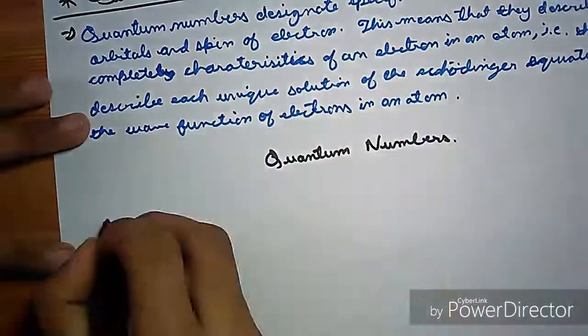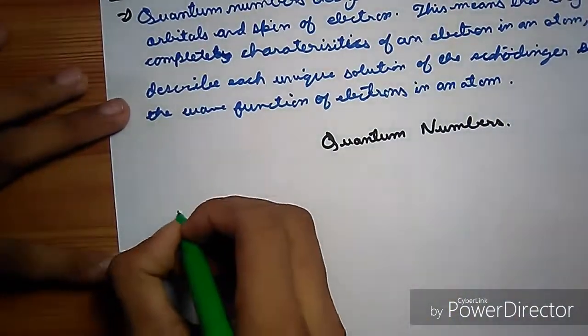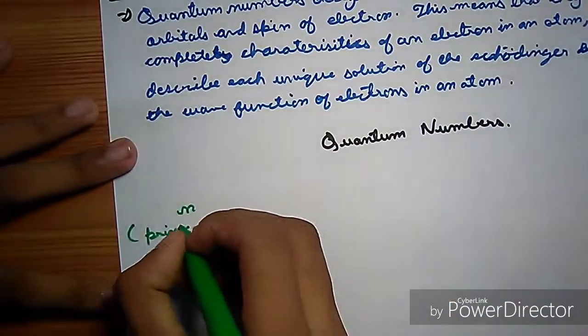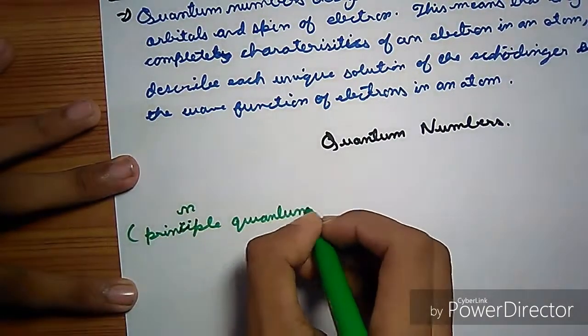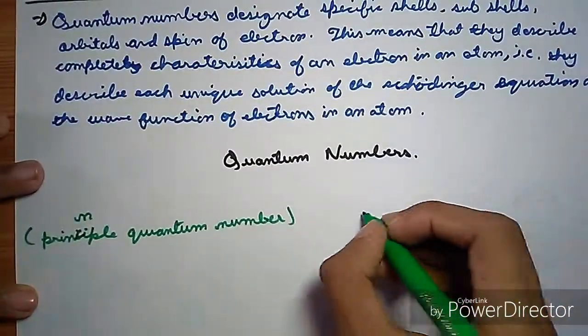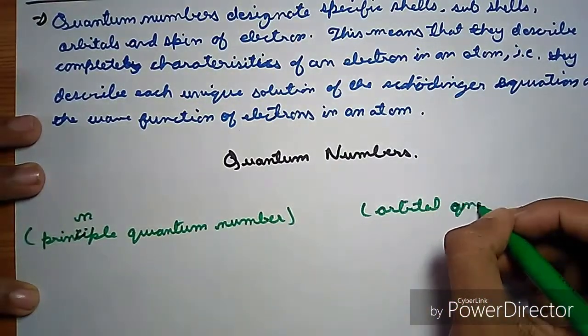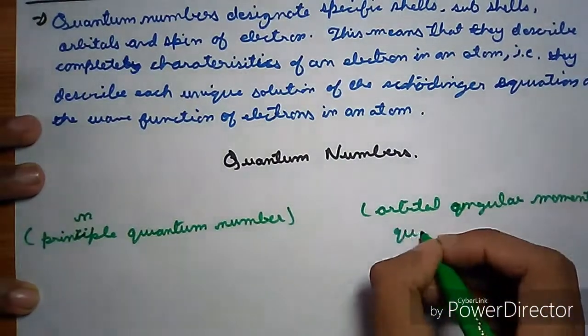Quantum numbers are a set of four numbers. The first one is principal quantum number. Second one is orbital angular momentum quantum number.